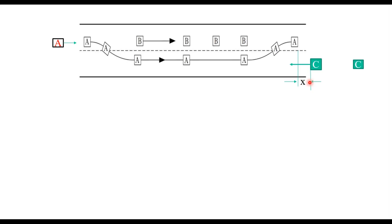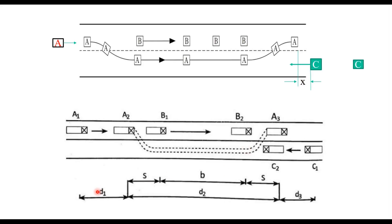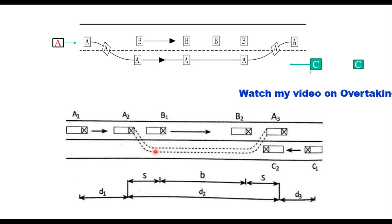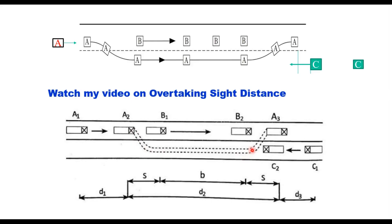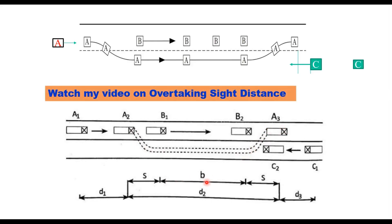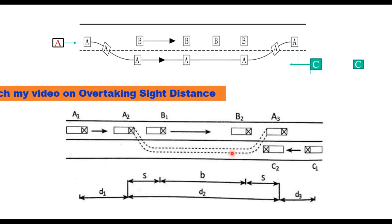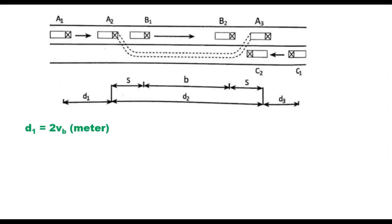There are three distances: d1 is the distance traveled by vehicle A during reaction time; d2 is the distance traveled by vehicle A during complete overtaking; and d3 is the distance traveled by the opposing vehicle during the overtaking time T. d2 is comprised of s and b: s is the distance required to shift from the original lane to the opposing lane and back, and b is the actual distance traveled in that lane.